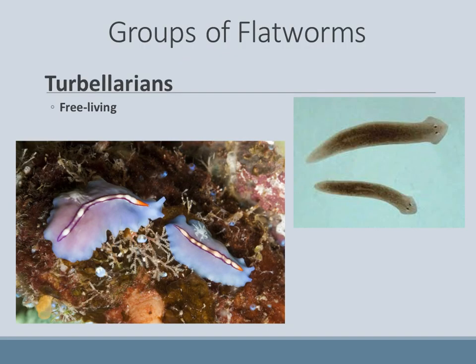There are three groups of flatworms. The turbellarians are the free-living ones that reproduce in the manner described earlier, where they fight over who gets to be male and who gets to be the female. They can be freshwater or marine in their environment.